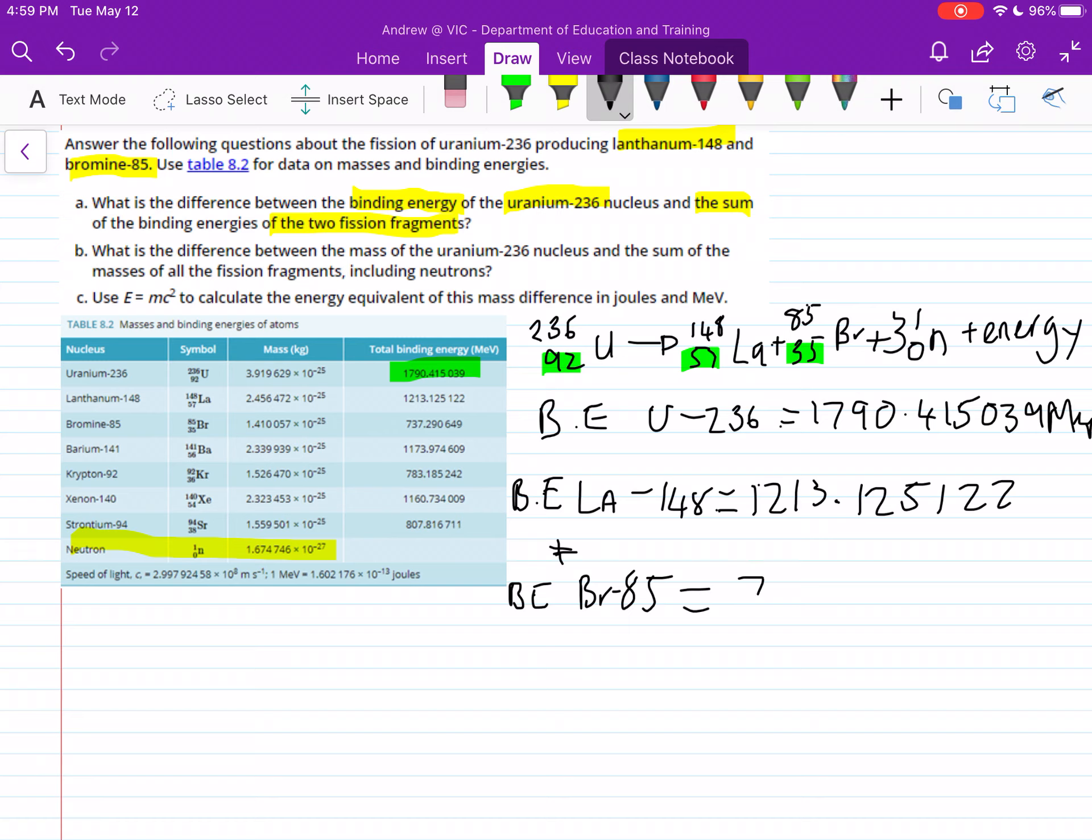And we'll need to add this to our binding energy of our bromine-85, which is 737.290649.